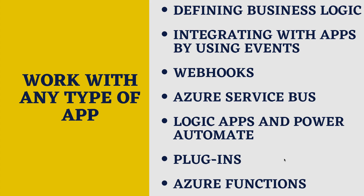Now let's discuss working with any type of app. In Microsoft Dataverse you get multiple ways to integrate with any type of app — whether it's a mobile app, web app, desktop app, device, system, or service. For cloud solutions, there are ways to integrate regardless of deployment model: infrastructure as a service, platform as a service, or software as a service. Integration with apps can be achieved using business logic in Dataverse, integration via events, the Dataverse data API, plugins, web hooks, Azure Service Bus, Logic Apps, Power Automate, and Azure Functions.